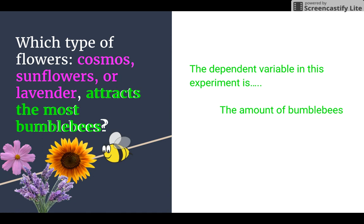So the dependent variable we can write as the amount of bumblebees. Because when we write it down, we're going to say cosmos attracted 10 bumblebees and lavender attracted 33 bumblebees, and so forth.